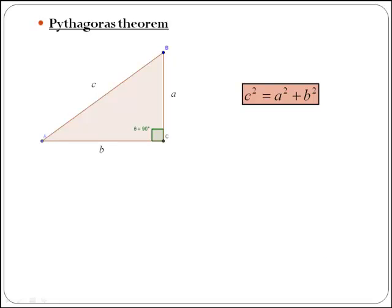The most important theorem about right angle triangles is called Pythagoras theorem. Pythagoras theorem says that the length of the hypotenuse squared is equal to the length of one of the sides squared plus the length of the other side squared.